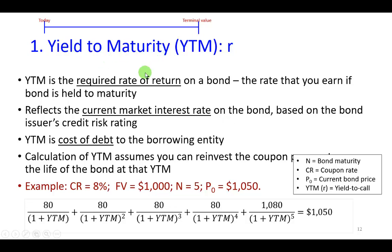Beginning with yield to maturity, which is the required rate of return on a bond — meaning that's the rate of return you're going to earn if you purchase the bond today and hold it until maturity. Whatever the interest rate you're going to be receiving when you lend the money is going to stay fixed over the life of the bond, which is why bonds are typically referred to as fixed income securities. That market interest rate that establishes the coupon interest rate you're going to receive every year until the bond matures is also going to be the cost of debt to the firm, because what you call your rate of return is what the borrower calls their cost of debt.